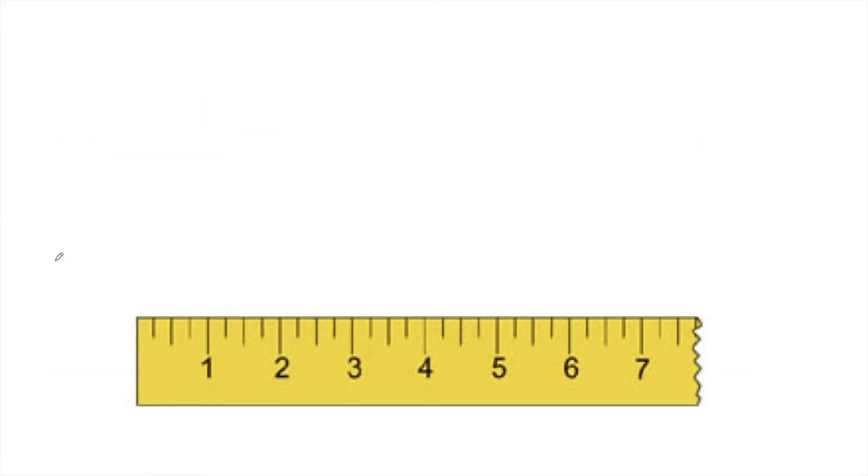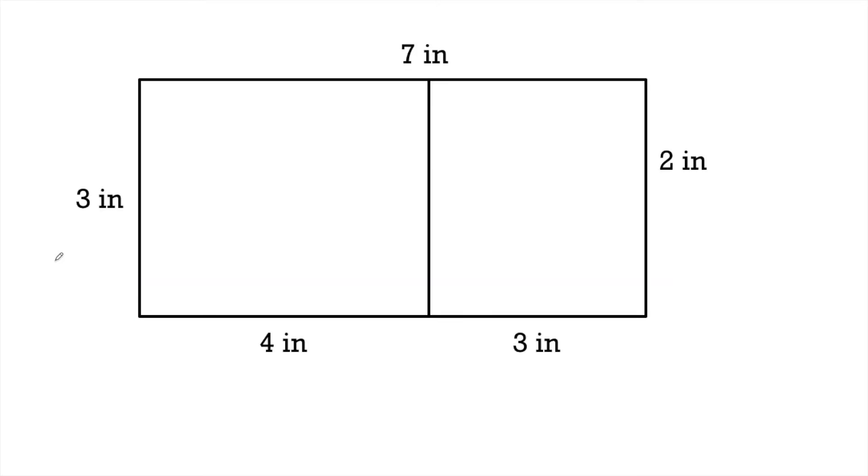We start the unit with measuring with a ruler because that's going to allow us to measure shapes, and then eventually that moves into imagining squares covering the shapes. Eventually we can even add on all their areas and then do that without a ruler but just with the numbers being provided. So all of that is really carefully scaffolded.